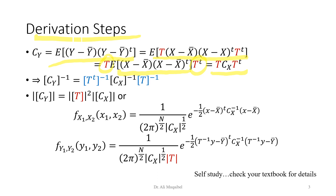If you want to find the inverse of Cy, you take the inverse of T, Cx, T-transpose, which splits as T-inverse times Cx-inverse times T-transpose-inverse. We can also find the determinant of Cy: because we have T and T-transpose, the determinant of Cy equals the determinant of T squared, multiplied by the determinant of Cx. The Gaussian random variable at the output is given by substituting Cy, obtained through the transformation.